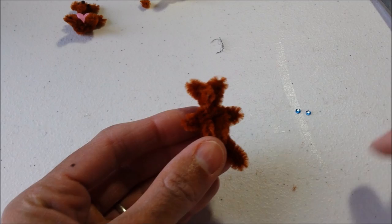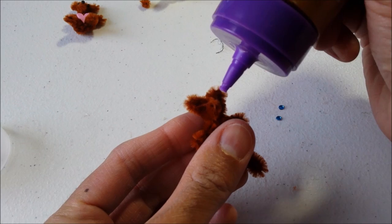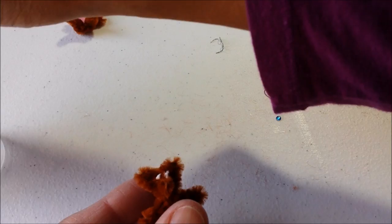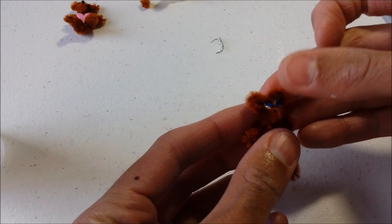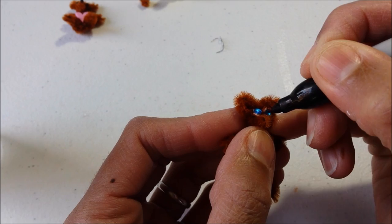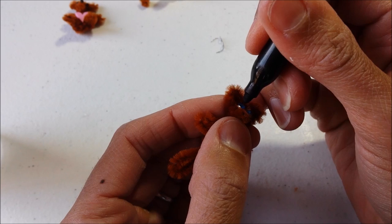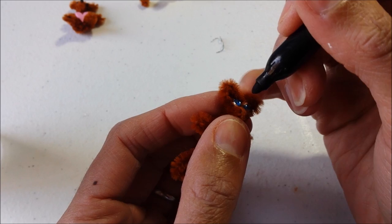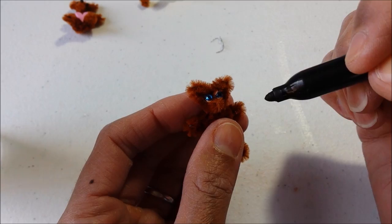And you can leave them as they are, or draw little pupils with a permanent marker. Being careful not to get on your pipe cleaner. You can do this before you glue them, but I find that my little sequins move around as I'm trying to do my pupils. So it's easier if they're already glued and they won't move while I color.